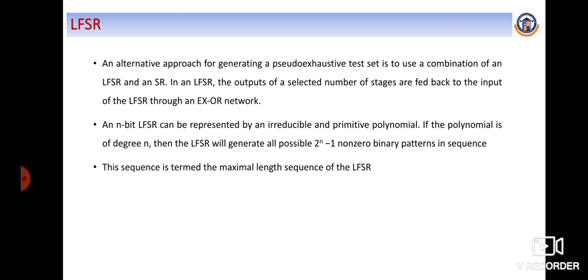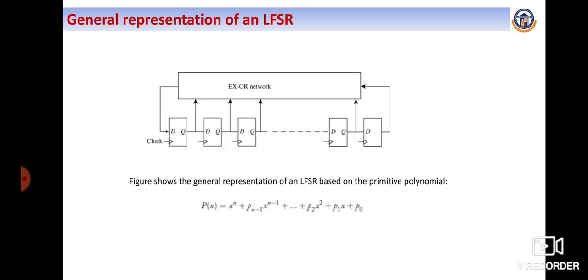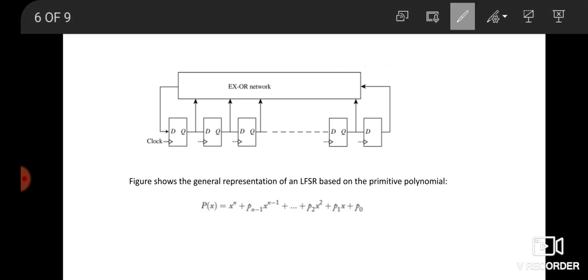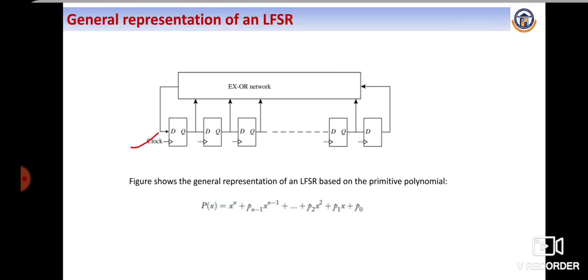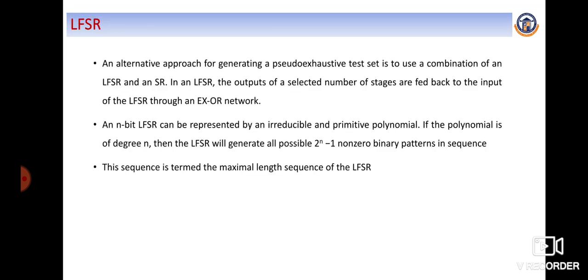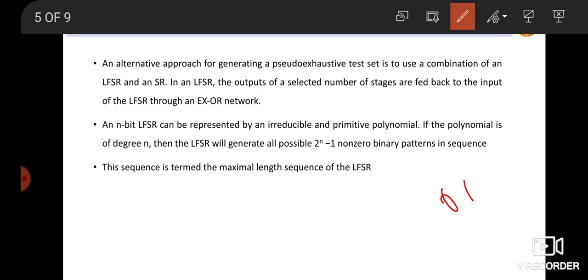In LFSR, the output of the selected number of stages are fed back to the input of the LFSR through an XOR network. This is the general representation of an LFSR. The number of stages are connected feedback to the XOR gates and it is connected to the first flip-flop input. In general, an N-bit LFSR can be represented by an irreducible and primitive polynomial equation. If the polynomial is of degree N, the LFSR will generate all possible kinds of test patterns except the all-zero combination. It produces only 2^N minus 1 non-zero binary patterns in sequence. This sequence is termed as the maximum length sequence of LFSR.